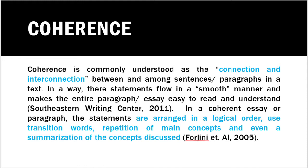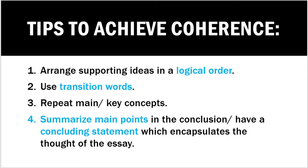So let's bank on that understanding: all the points, all the arguments, and all the statements must be arranged in a logical order. To achieve coherence, here are a few tips. First, the supporting ideas must be arranged in a logical order. Second, after you arrange them in a logical order, we have to put in transition words which will help in properly transitioning from point A to point B in a way that is smoother and unencumbered.